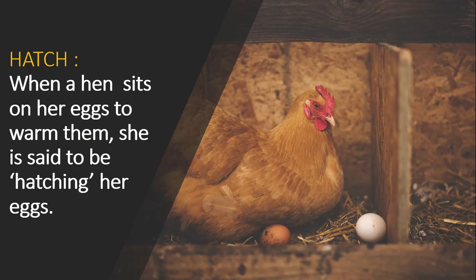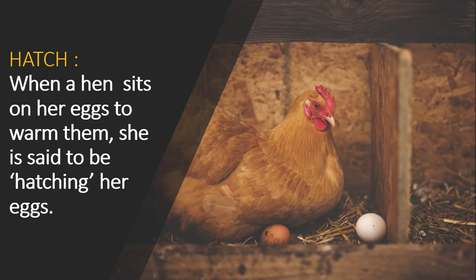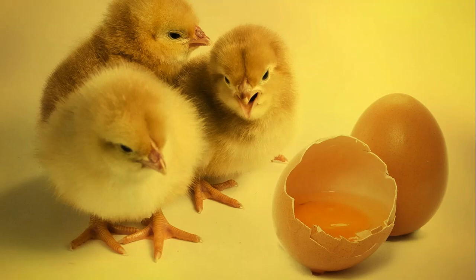She sits on them and warms them. And when she warms the eggs, the chick is growing inside the egg, slowly and slowly. And when the chick is grown completely, it breaks the egg shell and comes out. Children, are you understanding? The chick grows inside the egg, the mother hen warms it — she hatches them — and when the chicks grow fully, they break the egg shell and come out.